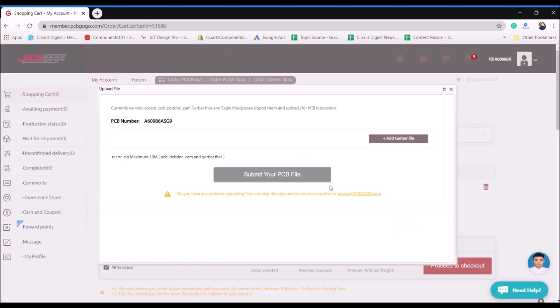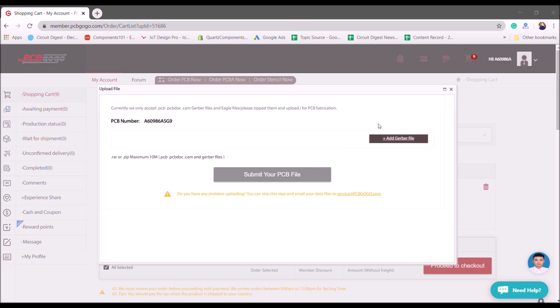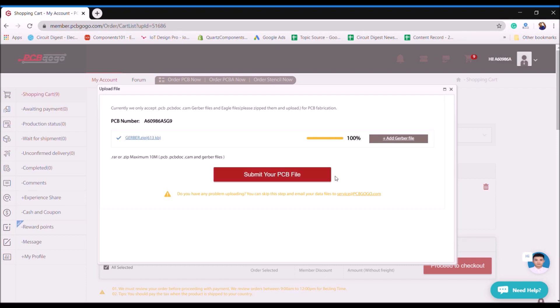You will be taken to another page where you have to upload the Gerber file. Now the Gerber file for this PCB can be found in the link given in the description of the video. I already have the Gerber file with me. I just have to add it and once it's uploaded it will take some time for them to check if the Gerber file is good. Once that is done you can just submit your PCB file and within few days your PCB would arrive at your doorstep.